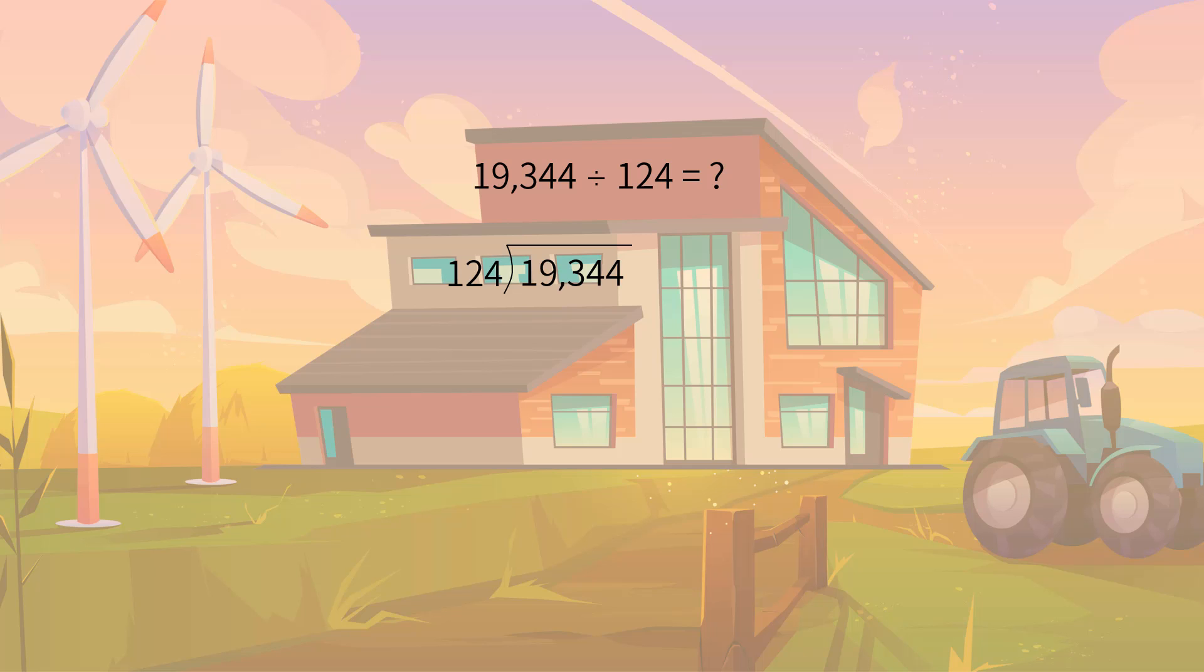First, we should estimate the partial quotients. Since 193 is bigger than 124 but smaller than 2 times 124, we estimate the first partial quotient as one. After making an estimation, we again calculate the multiple of the divisor and partial quotient. It is 124. We write it down and bring down the remainder, which in this step is 69.